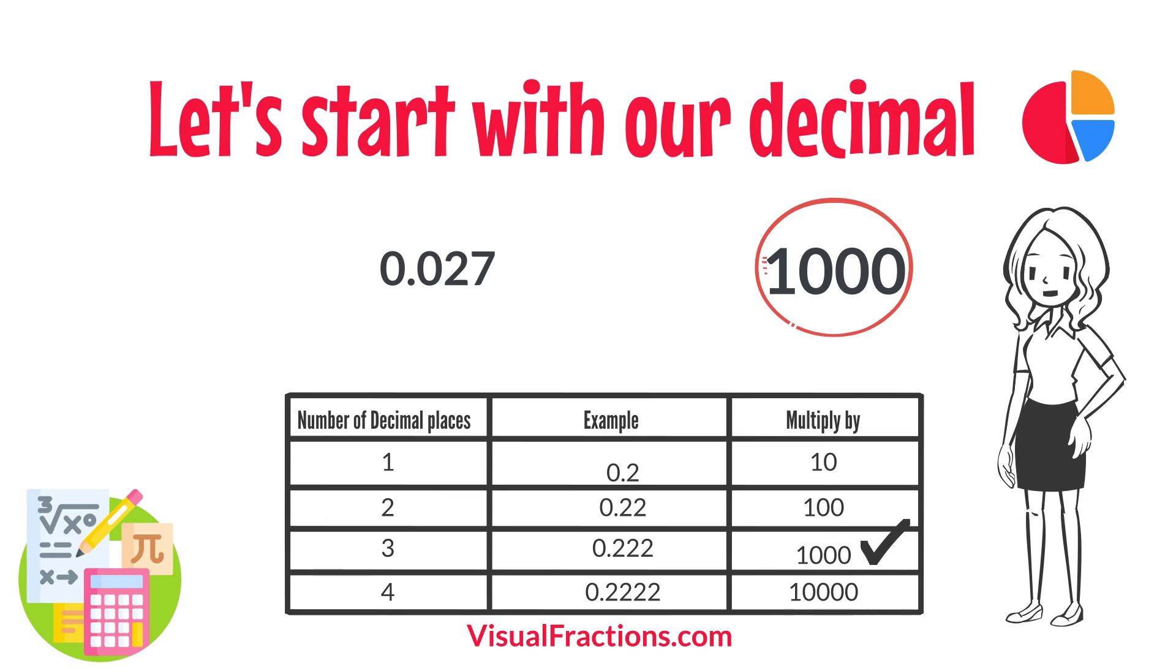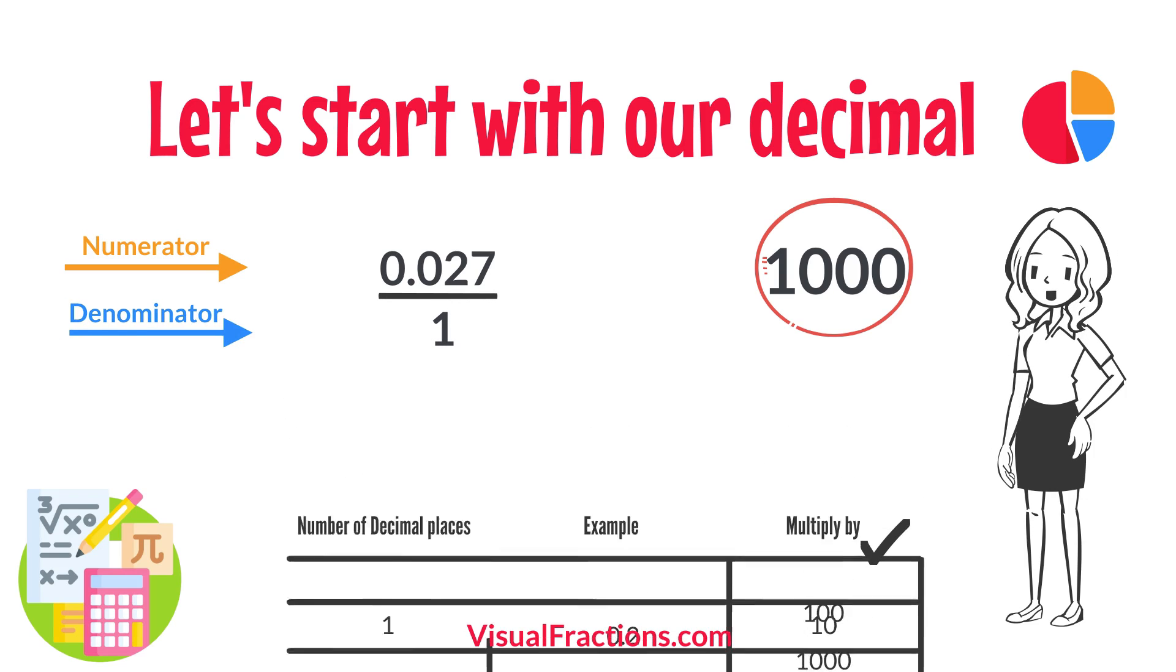To convert this decimal into a fraction, you initially put 0.027 over 1, essentially treating the decimal as the numerator in a fraction where the denominator is 1.